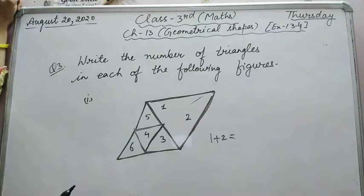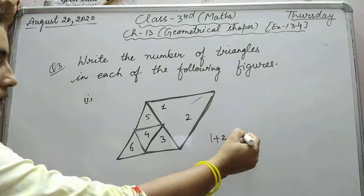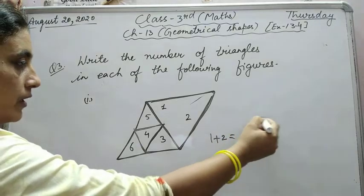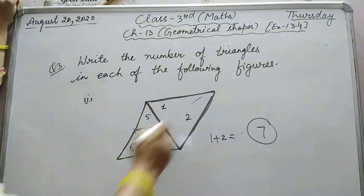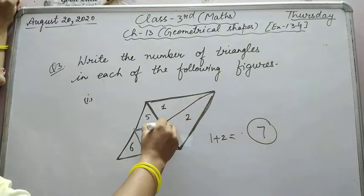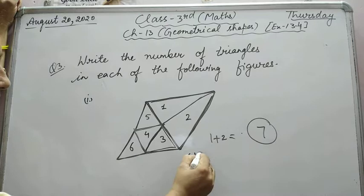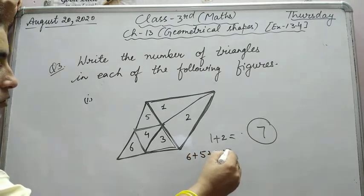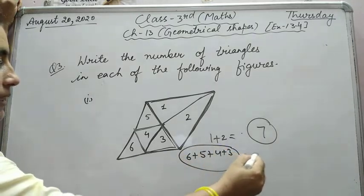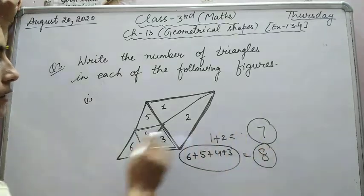Or you can count like this, for example, remove the middle line. So you have six triangles from the small ones. Then these two together make seven triangles. Similarly, these four together, six plus five plus four plus three, you'll get more triangles.